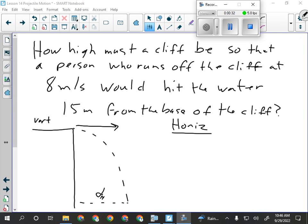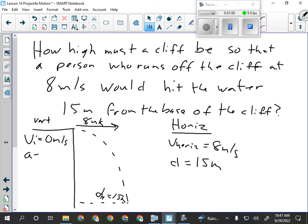So we got this person who's going to run off the cliff. They're going to run off the cliff at 8 meters per second, so that's our horizontal constant velocity. And they're going to hit the water 15 meters from the base of the cliff. And the other things we know because they ran horizontally, we know VI vertical is 0. We know the acceleration vertically is 9.81 meters per second squared down. We are looking for the vertical displacement.